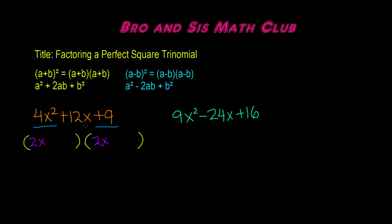The next step is to find the square root of the last term. As we said, the square root of 9 is 3, so we're going to put 3.